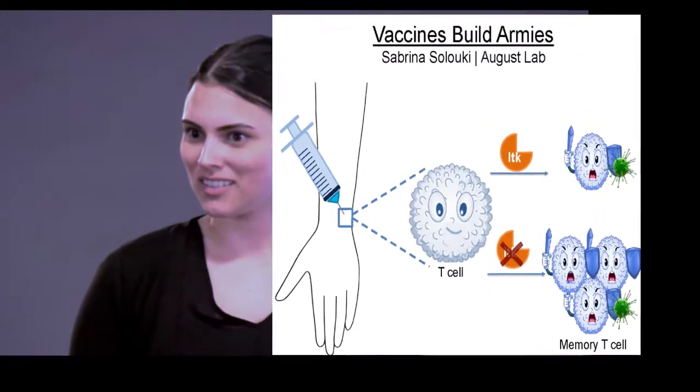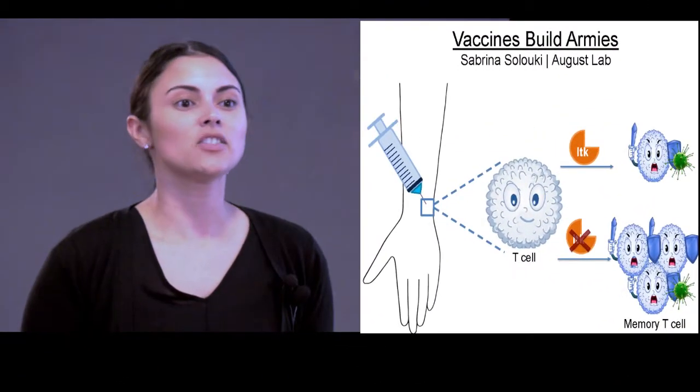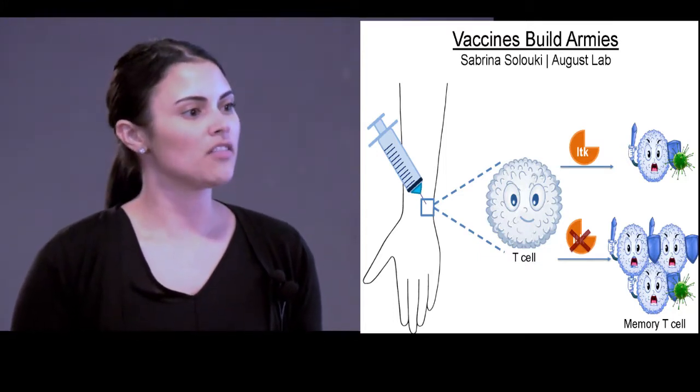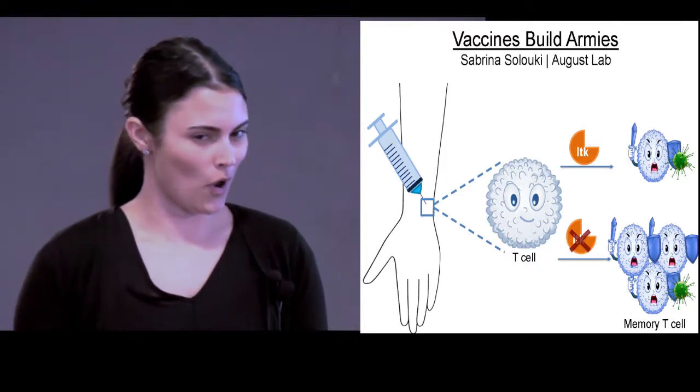So how do these remarkable vaccines work? Vaccines work by targeting the immune system of the human body. You can think of the immune system as being analogous to an army.